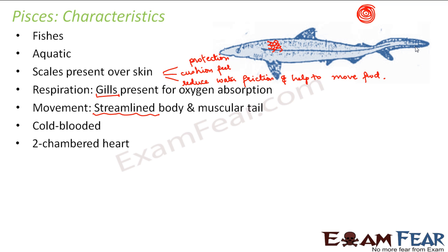Fishes have a two-chambered heart, unlike human beings who have a four-chambered heart. The heart in fishes is divided into two chambers. In terms of reproduction, fishes reproduce by laying eggs.